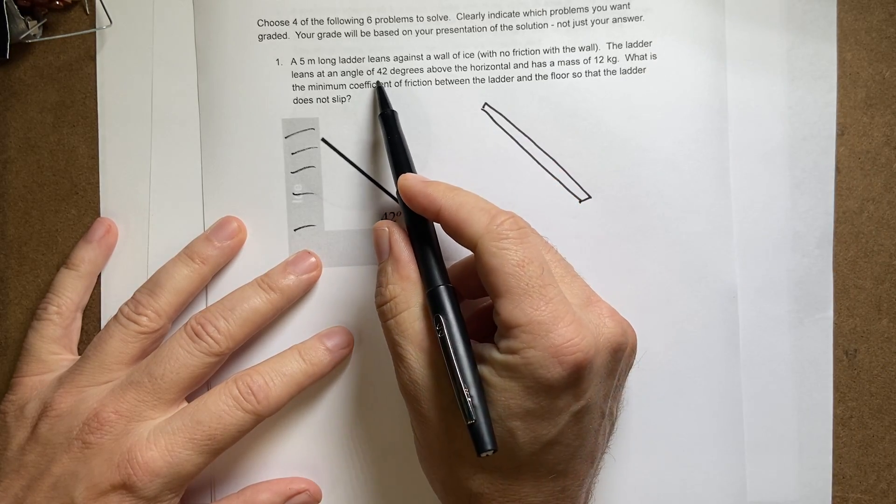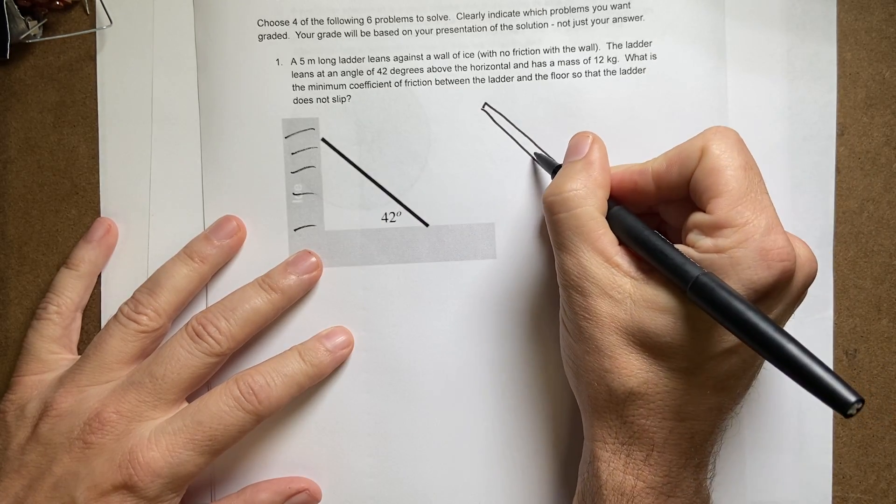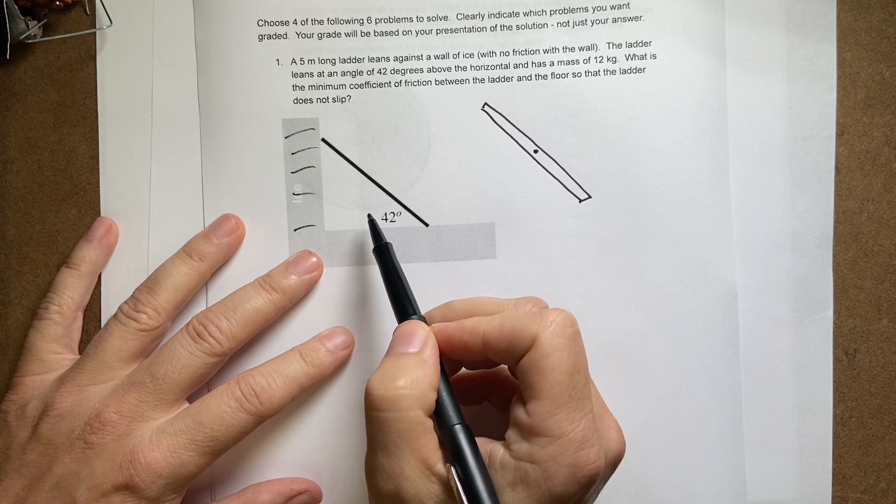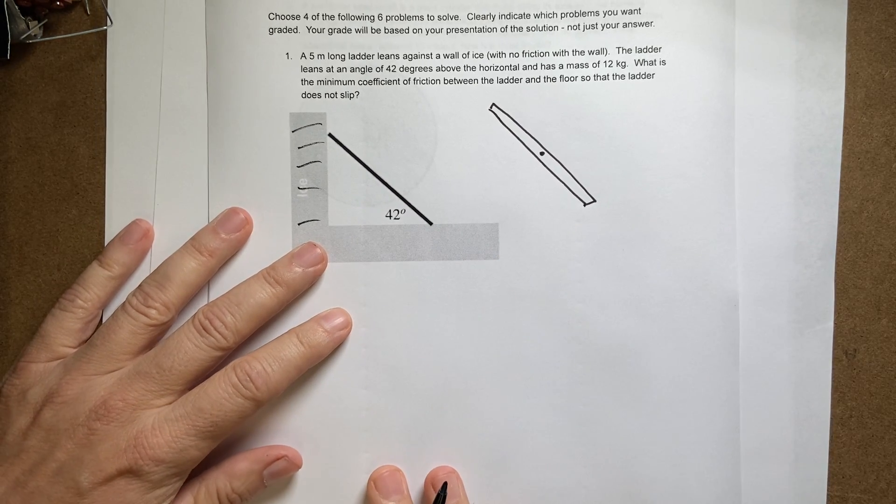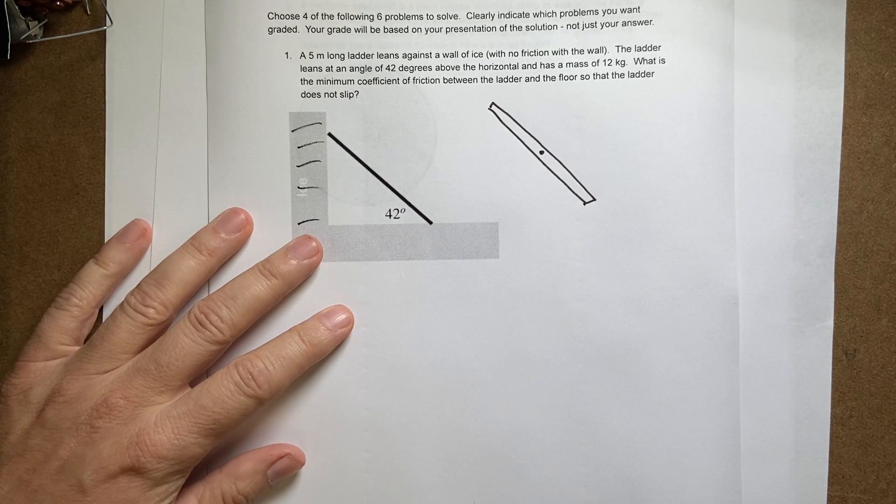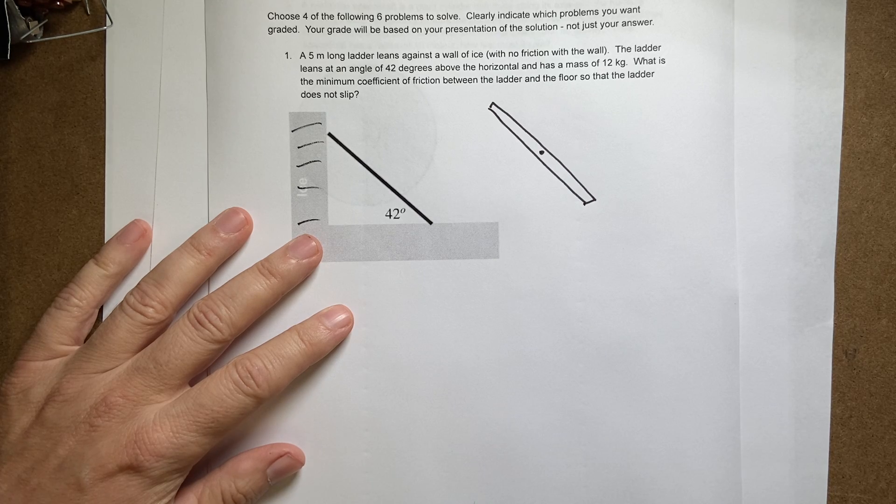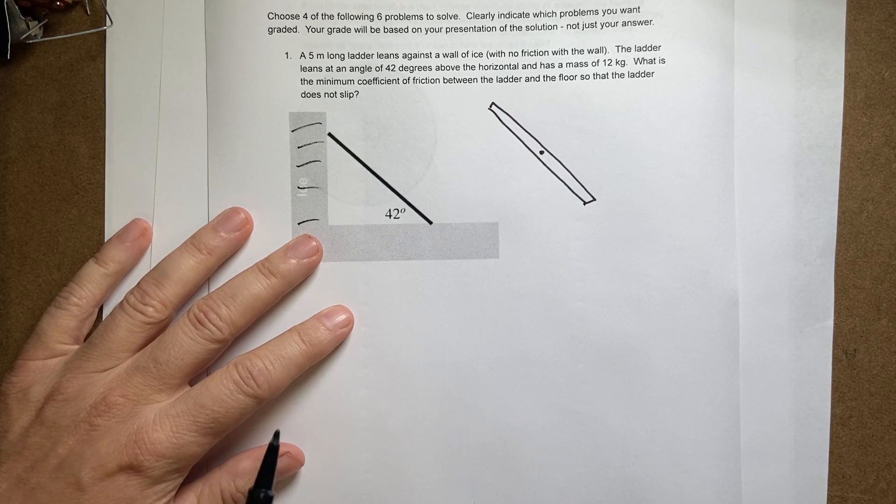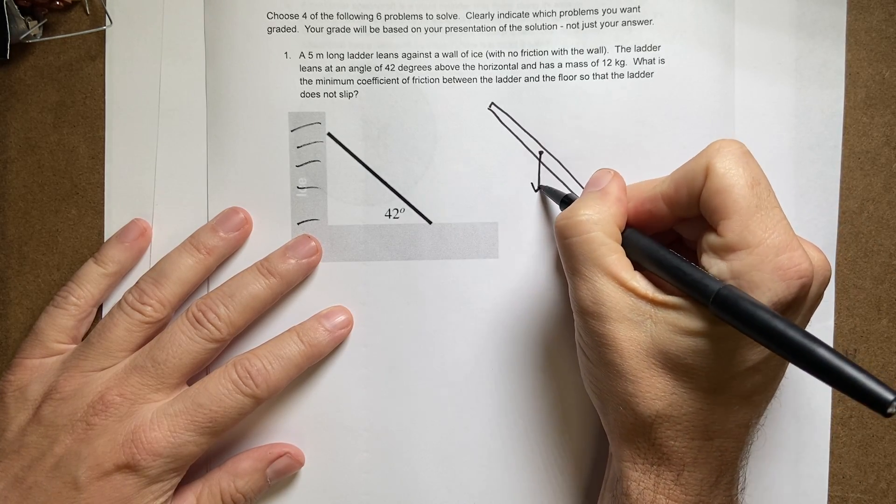So let me just redraw the ladder by itself and draw all the forces acting on the ladder. The first force I have is the gravitational force. The gravitational force actually pulls on every part of the ladder, but we can model this force as though it were pulling at one single point, the center mass, which is the center of the ladder. So we have that right here, mg.